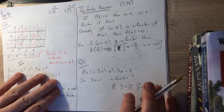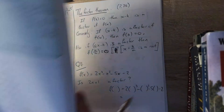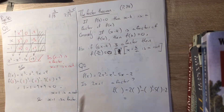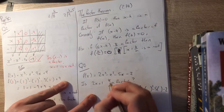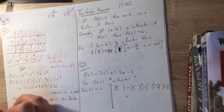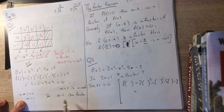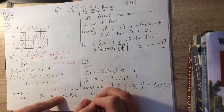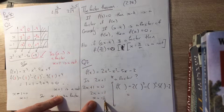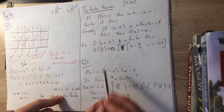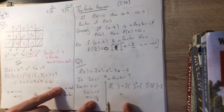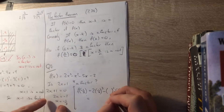Question 7 asks us to investigate if 2x plus 1 is a factor of 2x cubed minus x squared minus 5x minus 2. A useful trick: set the factor equal to 0 to find the root. So 2x plus 1 equals 0 gives 2x equals minus 1, meaning x equals minus a half. So if 2x plus 1 is a factor, then minus a half will be a root. Here k is 1 and a is 2, giving k over a as one half with a sign change to minus.